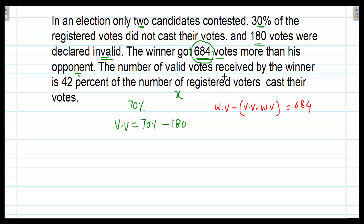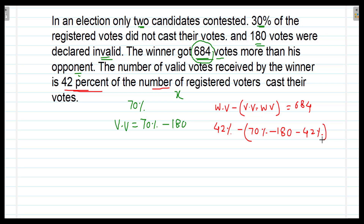The number of valid votes received by the winner is 42% of the number of registered voters, so winner's votes equal 42% of x. Valid votes are 70% of x minus 180. So the equation becomes: 42% of x minus (70% of x minus 180 minus 42% of x) equals 684.